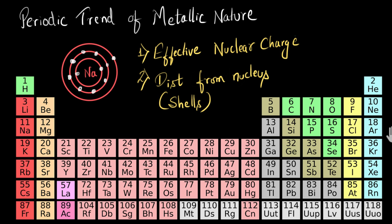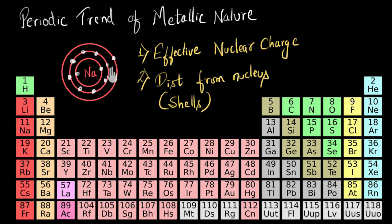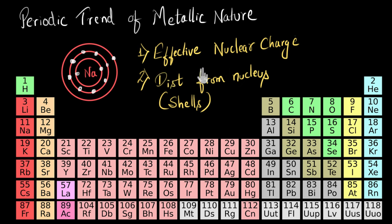The first factor is effective nuclear charge. This basically means: effectively, how many protons are pulling our electron? If the number of protons pulling is more, the pulling force is going to be higher; if less, the pulling force is lower. For example, if you have one magnet pulling an iron nail, the pulling force is less compared to if you had two magnets.